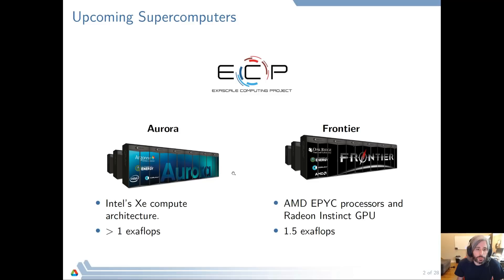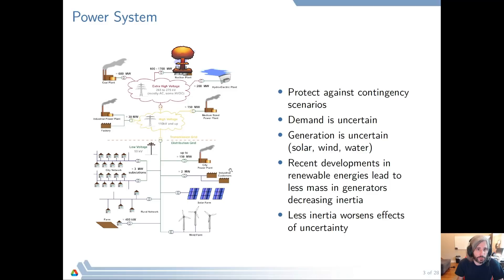The upcoming supercomputers will mostly rely on GPUs, and that's a surprise since it was not planned that way. It was only planned that half of the systems would support GPUs and the other would be more multicore. So if you want to make use of these machines efficiently, we have to make use of the GPUs. And this also had consequences for our project.